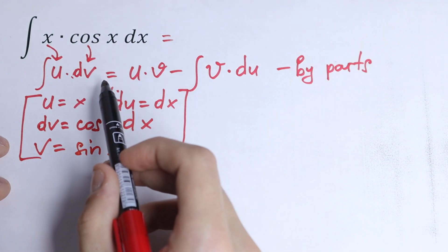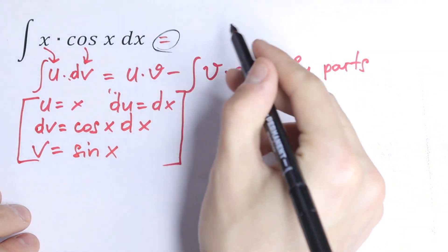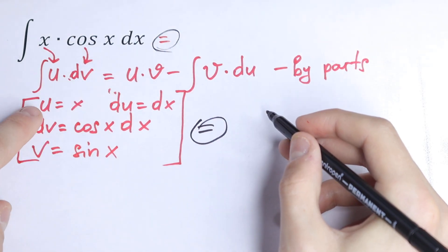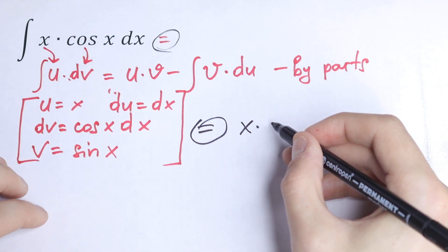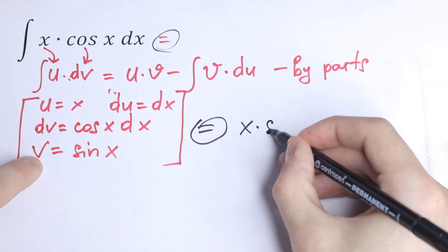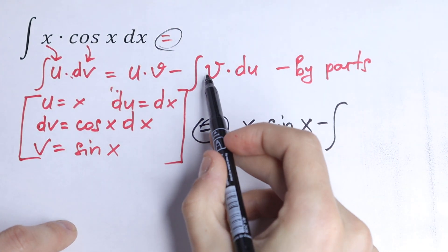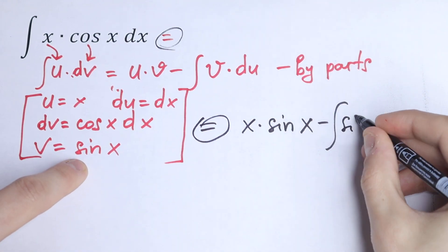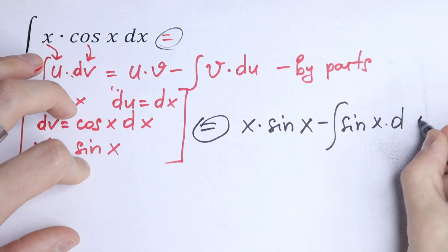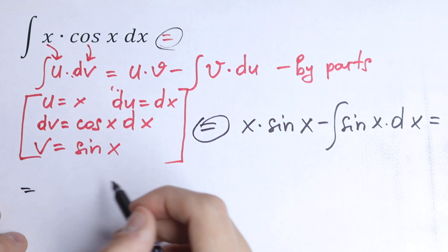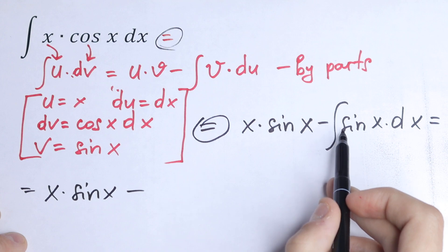So this is all we need for our formula. As a result, we will have that this integral will be equal to u times v. U will be x, u times v is x sine x, minus integral v times du. V is sine x, du equals dx.